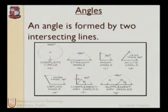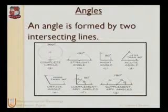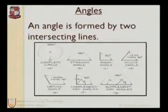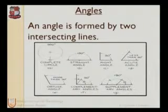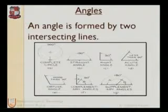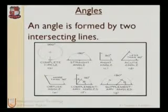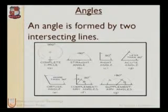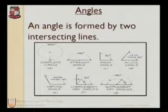First we will see what angles are. An angle is formed by two intersecting lines. A complete circle is 360 degrees, formed by two overlapping lines. A straight line has 180 degrees. Two angles that sum to 90 degrees are called complementary angles. Two angles that sum to 180 degrees are called supplementary angles.